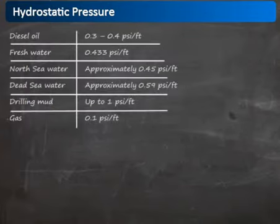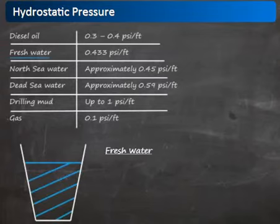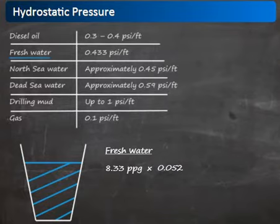This table shows some examples of pressure gradients for different fluids. If we take fresh water, for example, its density expressed in pounds per gallon is 8.33, and if we multiply it by 0.052, a constant, we find that the pressure gradient is 0.433 psi per foot.